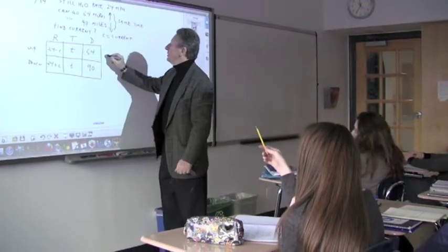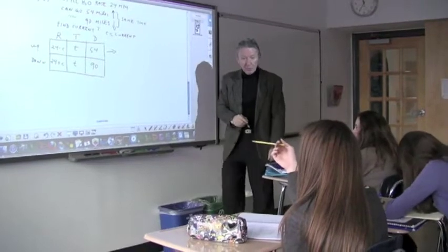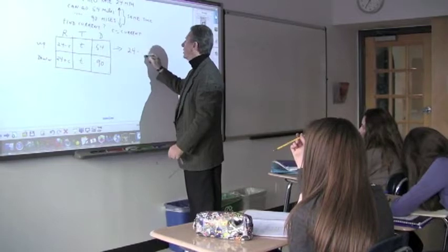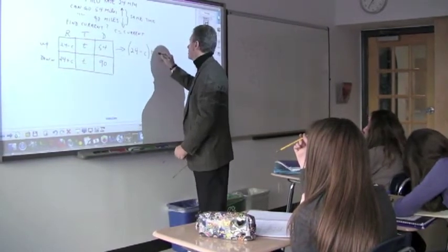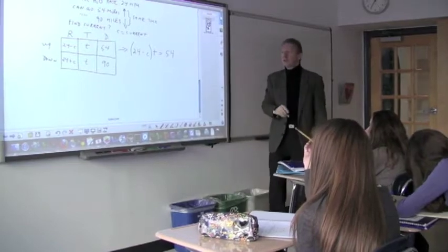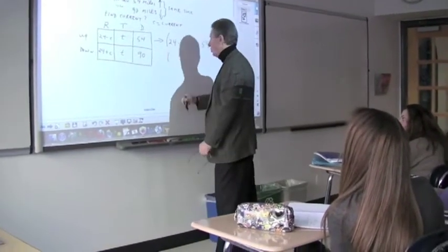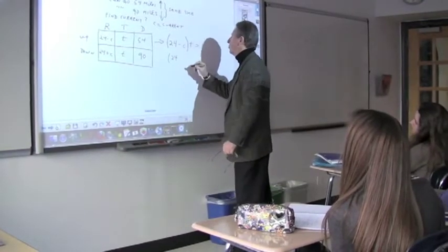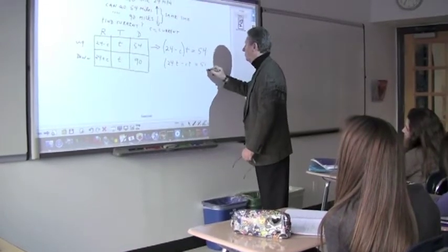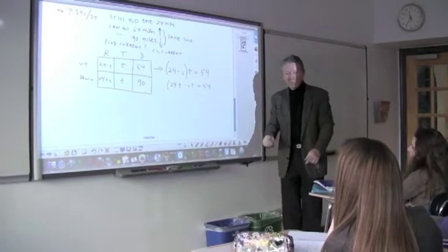Therefore, this could also be written. So, tell me what you would like to write. So, 24T minus CT. Oh, well, okay. So, you're multiplying R. You know what I like to show? First, the intermediate step. So, you have that. Right? And then this would be written. So, it's 24T minus CT. Okay. So, you want to do it first before the other one. All right. 24T minus CT is equal to 54. Okay. And can we do the same with the next one? Go ahead.